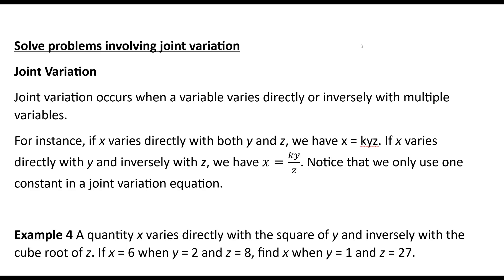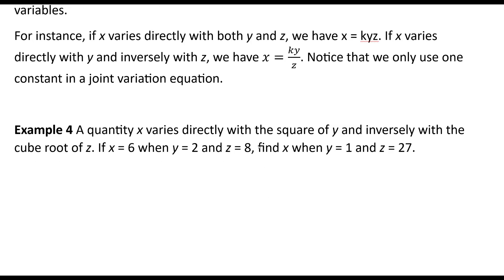For instance, if x varies directly with both y and z, we have x equals k times y times z, where k is a constant of proportionality or constant of variation. If x varies directly with y and inversely with z, we have x equals k times y over z. Notice that we only use one constant in a joint variation. We don't need more than one.